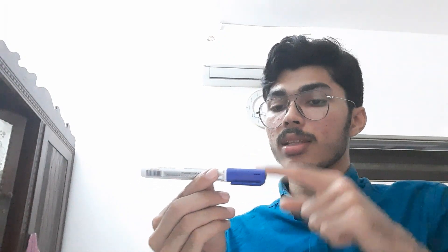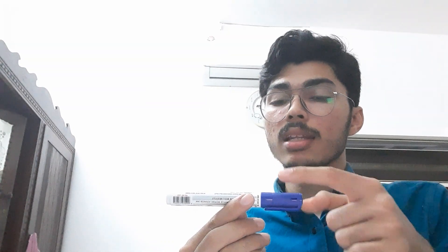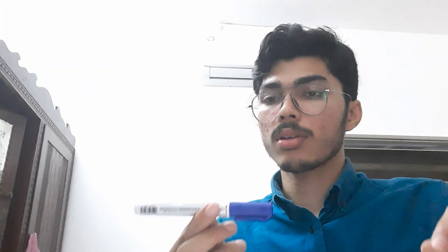Pseudomonas has a slime that acts as a virulence factor. It forms biofilms, which reduces the entry of antibiotics. The presence of this slime also gives anti-phagocytic action — that is, it is difficult to phagocytose. It also helps in adhesion to certain regions.